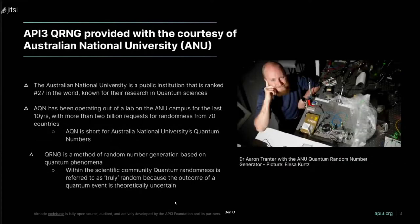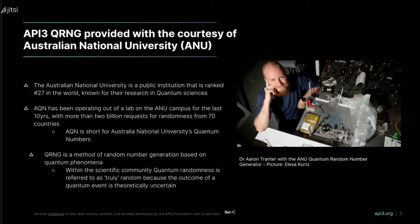Moving on to API3 QRNG — Airnode has been deployed to an API from a division of the Australian National University known as the Quantum Optics Division. They've been operating out of a lab on campus for about 10 years, consistently and reliably serving quantumly generated randomness through an API for three or four years. They refer to this as AQRN — Australian National University Quantum Numbers. Quantum randomness relies on fluctuations within atoms.